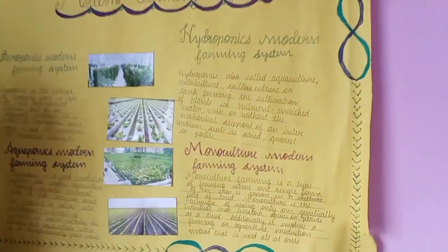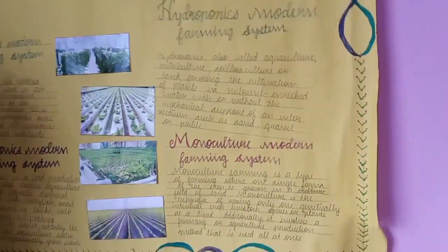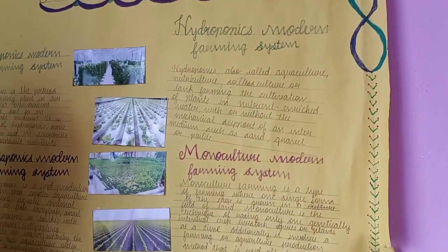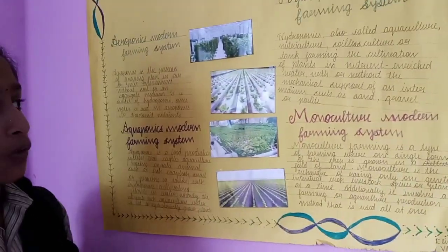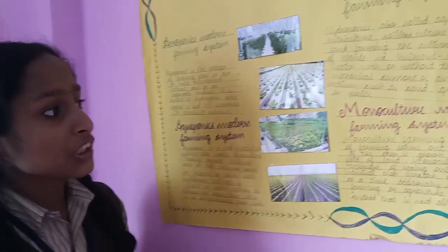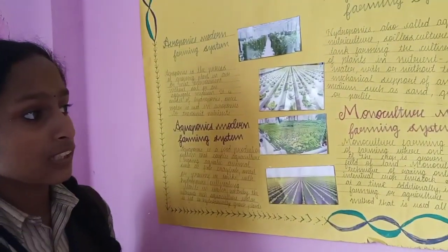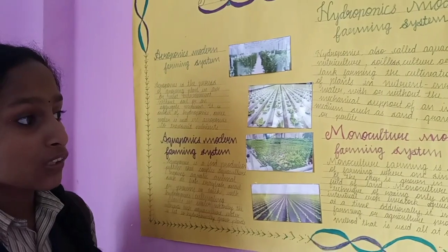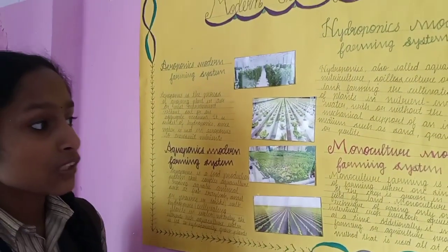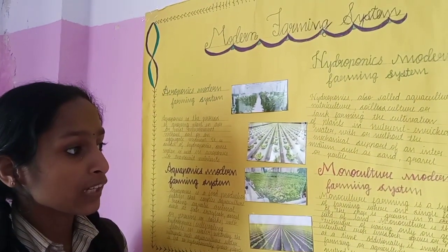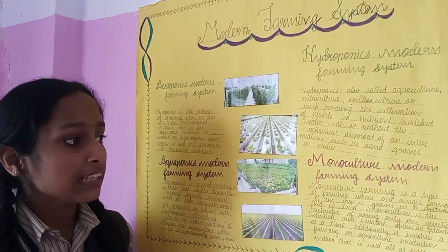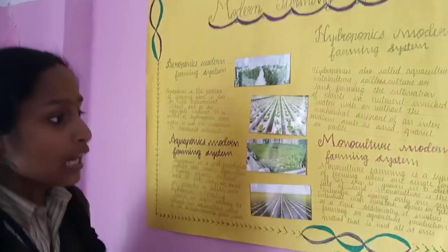Next is the hydroponic modern farming system. Hydroponics is also called aquaculture, nutriculture, soilless culture, or earth farming. It involves the cultivation of plants in nutrient-enriched water without the mechanical support of soil.